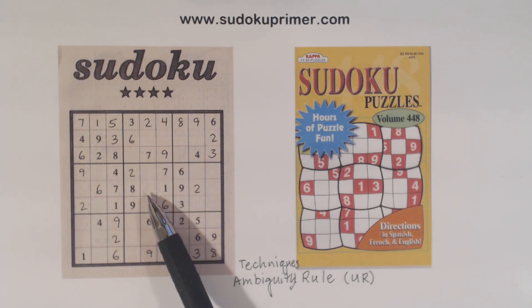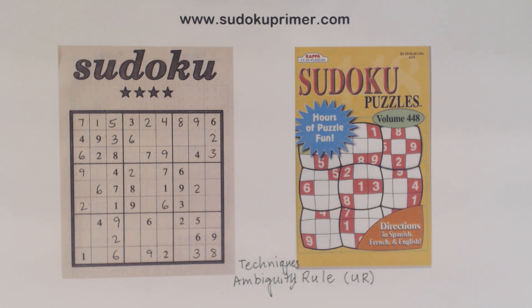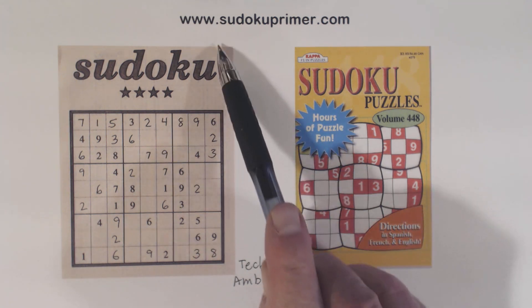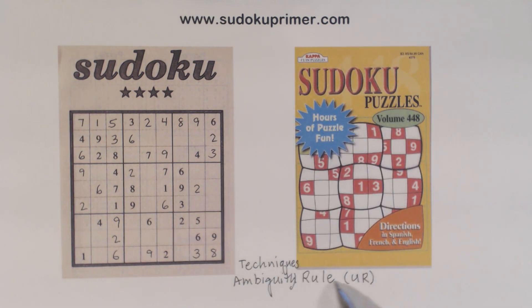Today we're going to look at puzzle number 90 from Kappa Sudoku Puzzles volume 448. We will discuss a unique way to look at unique rectangles. Unique rectangles are difficult to see and sometimes difficult to understand, but when you understand them, they can help you solve very difficult puzzles. If you don't understand them, go to sudokuprimer.com and look at the ambiguity rule in the techniques section. Learning them is well worth the effort.